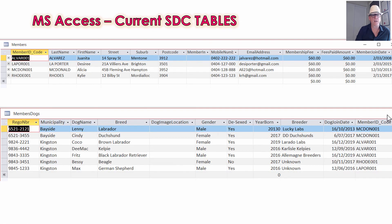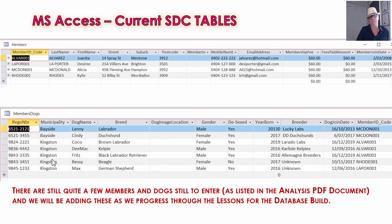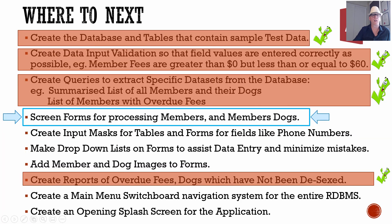We haven't done anything to the tables in this report — we haven't added any new members or dogs — but there are still a few members and dogs to put in from the analysis document. We'll be doing that in the next lessons, especially when we do the Forms lesson. So where we're up to: we've created the tables, did validation and masking, made nine queries, and today we created reports for four of those queries. Next, we'll be moving on to screen forms.